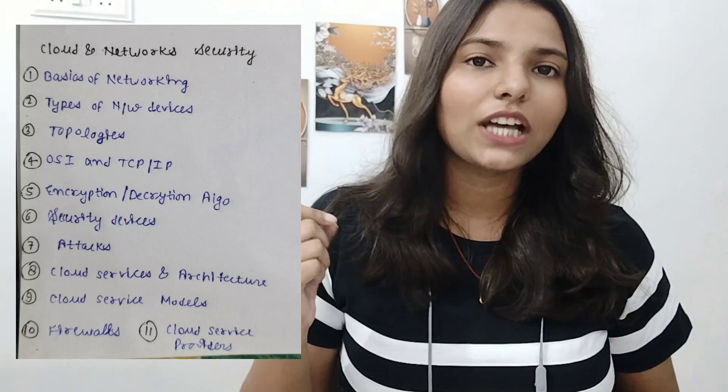Now let's move to cloud and network security. The first topic is basics of networking: what is networking, how many types of network devices are there, what is topology and how many types of topologies exist. After that, complete the OSI and TCP/IP models — memorize the functionality of each layer and which protocol works on which layer. I'll add all the resources in the Telegram community; you can access the PPT from there for free.